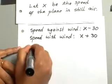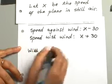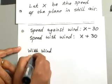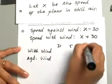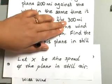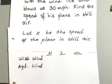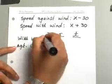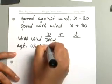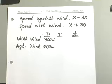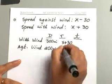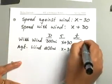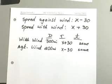Let's make a chart. When flying with the wind, his distance is 300 miles and his rate is X plus 30. When flying against the wind, his distance is 200 miles and his rate is X minus 30. The time is the same in both cases, as stated in the problem.